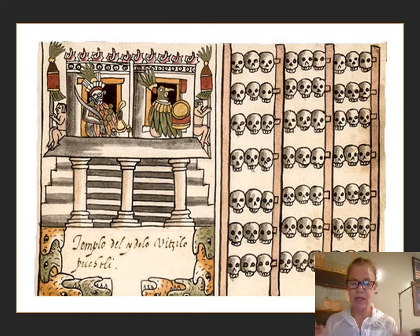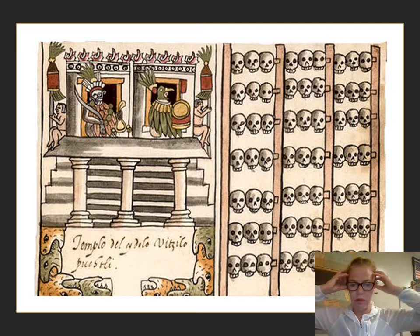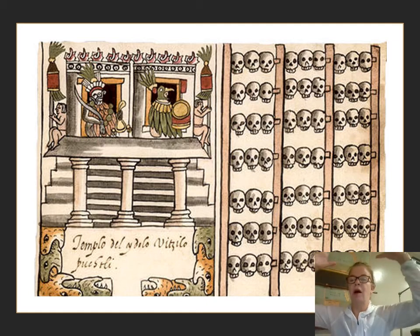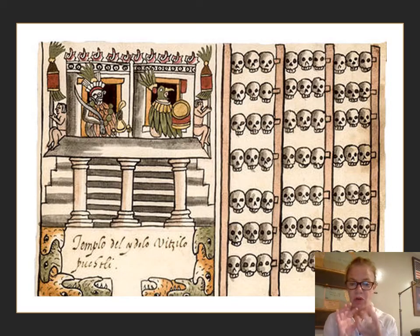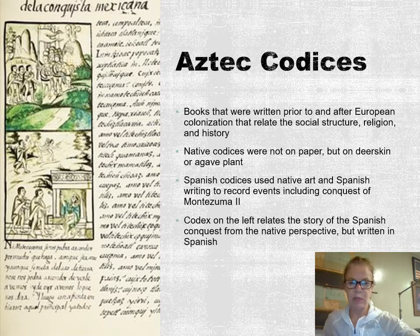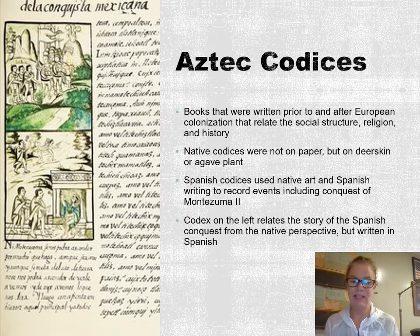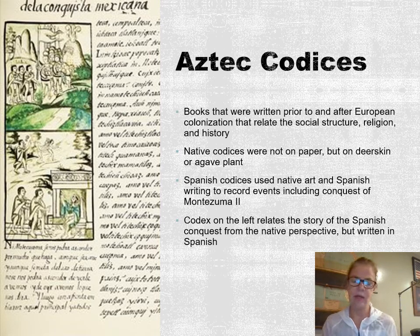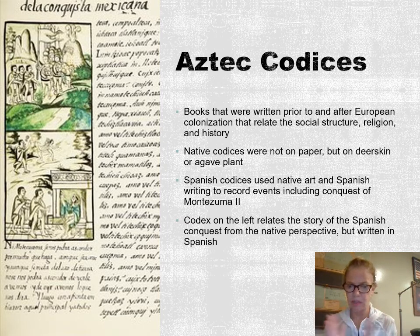Here is an Aztec depiction of building skull columns — they would bore holes through the skulls, put rods through them, join them together, wrap them around, and make huge columns with mortar. The codices involved drawings done by the indigenous population while the Spanish would write these things down, recording native arts and events including the conquest of Montezuma. Sometimes the accounts differ because the Aztec and Spanish perceptions were very different — the Aztecs said the Spanish just came and killed them for no reason, while the Spanish claimed it was self-defense.